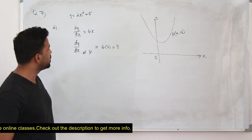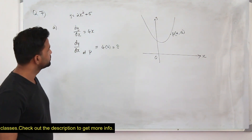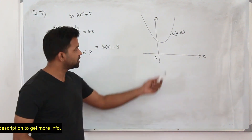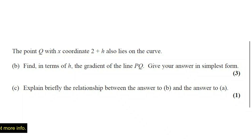That's how you find the gradient of any function at any given point. This question has two marks. Now Part B: the point Q with x coordinate 2 plus h also lies on the curve. Find in terms of h the gradient of the line PQ. Give your answer in simplest form. The question has three marks.